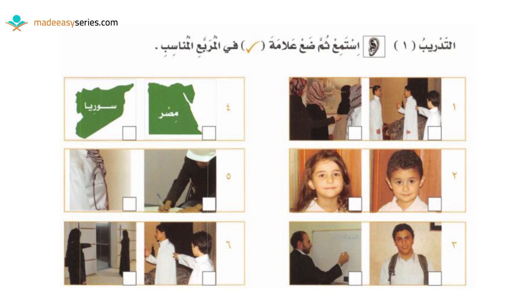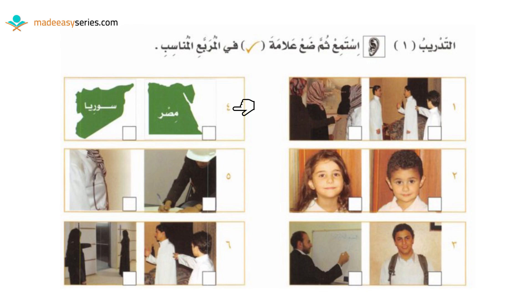استمع، ثم ضع علامة صحيح في المربع المناسب. واحد: هذا. اثنان: أخت. ثلاثة: مدرس. أربعة: مصر. خمسة: طبيبة. ستة: أنت.